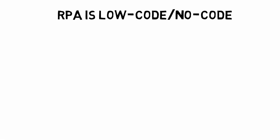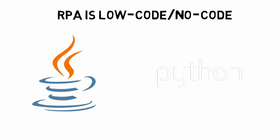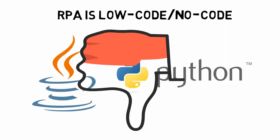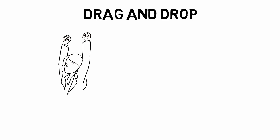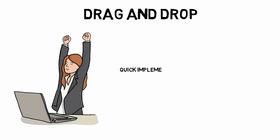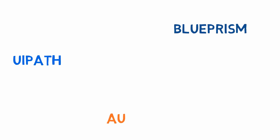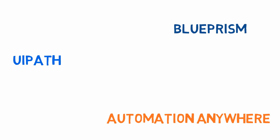Low code or even no code is one of the key elements in RPA, meaning that RPA does not require high development skills like Java or Python. Instead, it can be solved by simple drag and drop, and by that we have a solution that can be implemented both quickly and by the people that understand the business process. For the big RPA guns like UiPath, Blue Prism and Automation Anywhere, that works fine when it comes to simple desktop automation like updating applications, browser work or Excel work.